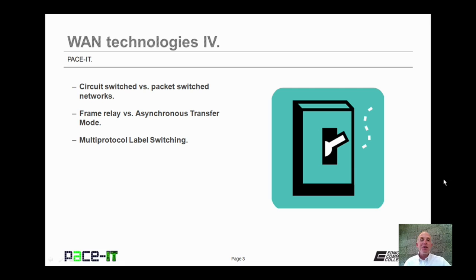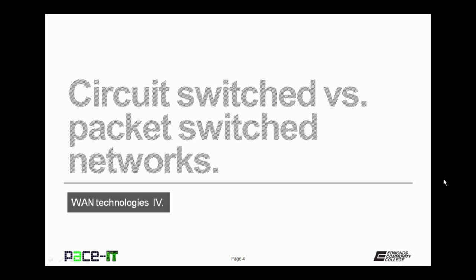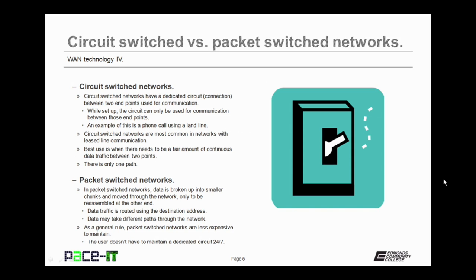There's a whole lot of ground to cover, not a whole lot of time. Let's go ahead and begin. Circuit-switched networks have a dedicated circuit between two endpoints that is used for communication. While set up, the circuit can only be used for communication between those endpoints.